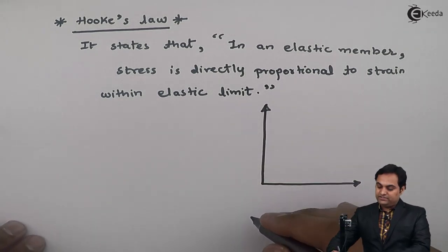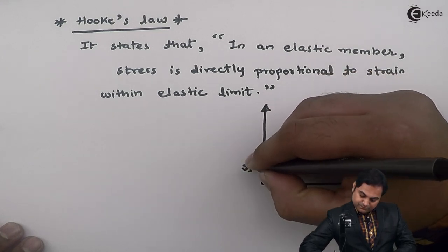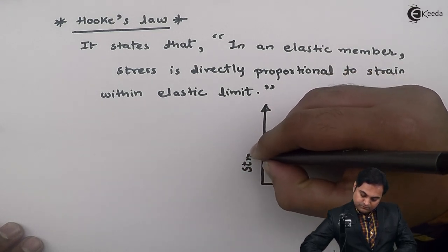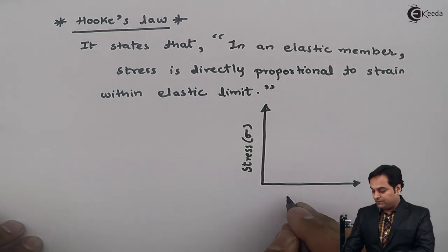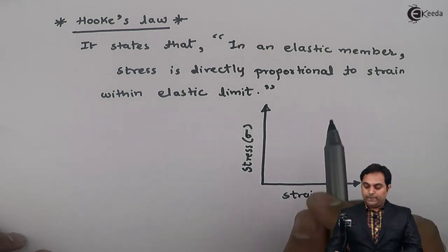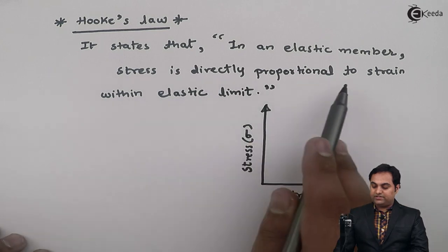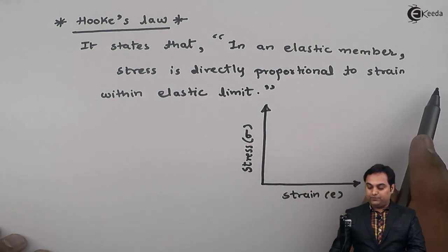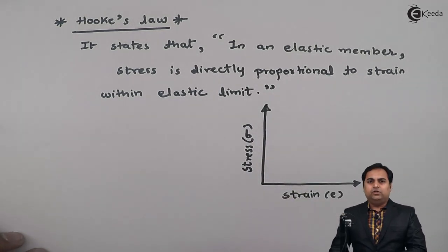On the y-axis we have stress, and on the x-axis we have strain. Hooke's Law states that in an elastic member, stress is directly proportional to strain within the elastic limit.